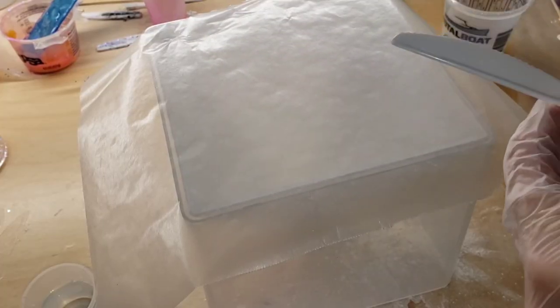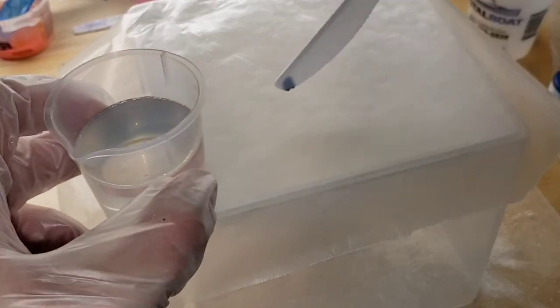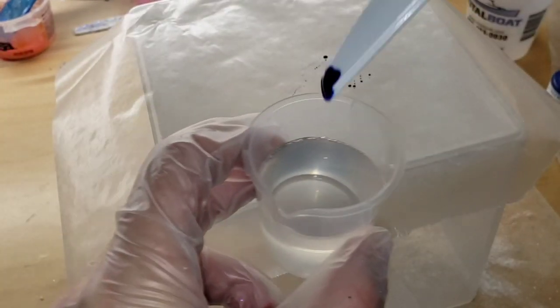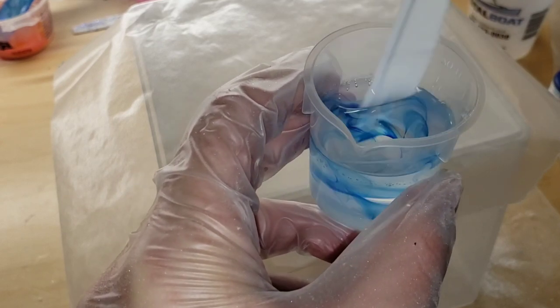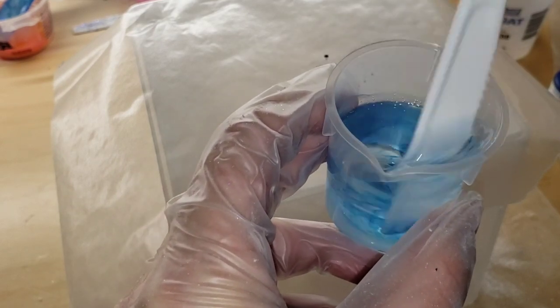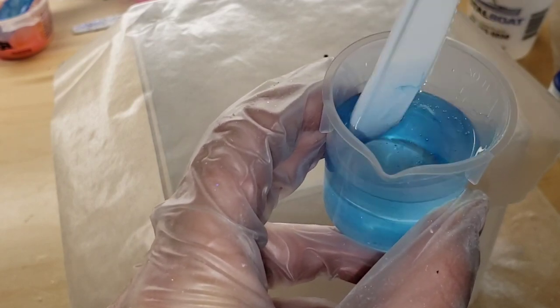I'm going to be adding a tiny bit of Laura's True Blue tint to my clear resin. I didn't want much, so I added a drop to my knife, or my little plastic knife here, scraped off the excess, and I'm stirring it in. I just wanted a tiny bit of blue, I didn't want much at all.